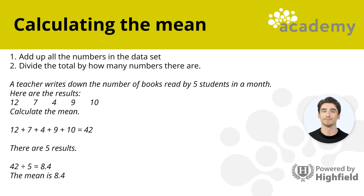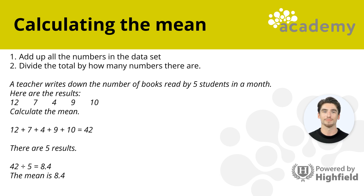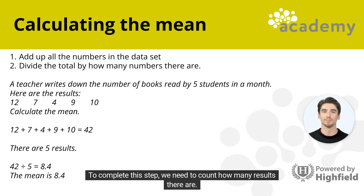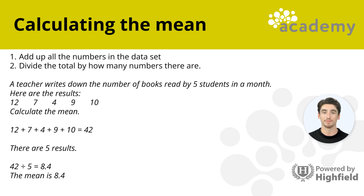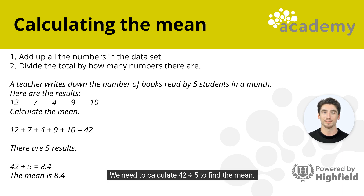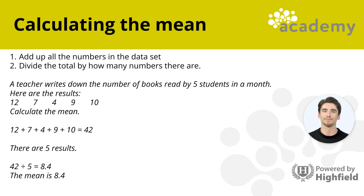Let's move on to Step 2: divide the total by how many numbers there are. Five students submitted their results, so we need to calculate 42 divided by 5 to find the mean. 42 divided by 5 is 8.4. The mean is 8.4.